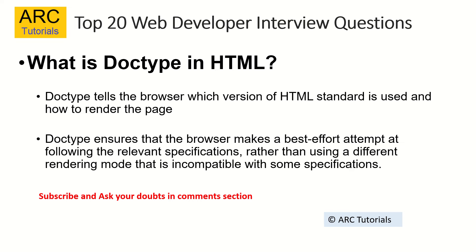The first question is: what is DOCTYPE in HTML? DOCTYPE tells the browser which version of HTML standard is used and how to render the page. It is an essential element in an HTML page that ensures the browser makes the best effort attempt at following the relevant specifications, rather than using a different rendering mode that is incompatible with some specifications.